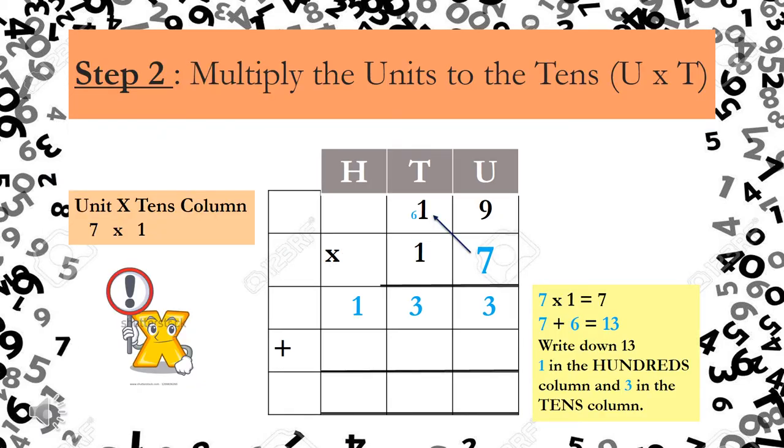Step 2. Multiply the units to the tens. Now, we're still dealing with the 7 boys and girls. So unit times ten, which is 7 times 1. The 1 is from the 19. 7 times 1. And 7 times 1 is 7. What do I do with the 6? I add it to 7. So 7 times 1 is 7 plus 6 equals 13. Now I want you to hold that number in your mind. Boys and girls, you can see that there's no number in the hundreds column. Because there's no number there, I don't need to carry. So I'm going to take the number 13 and write it down. The 1 goes in the hundreds column and the 3 goes in the tens column.